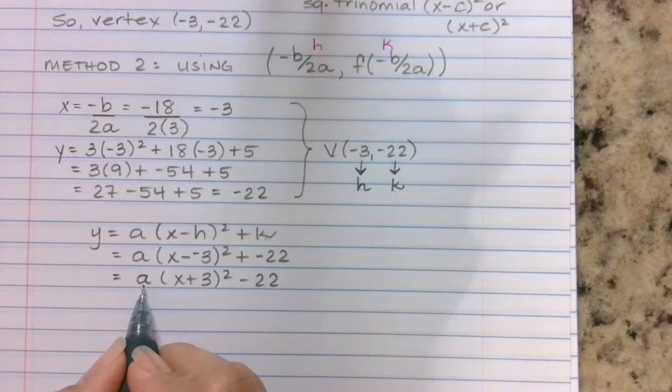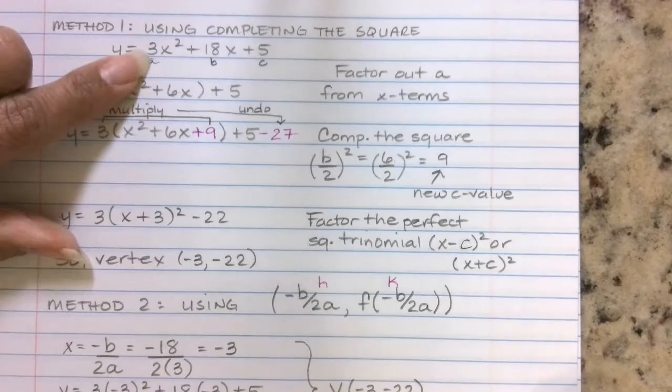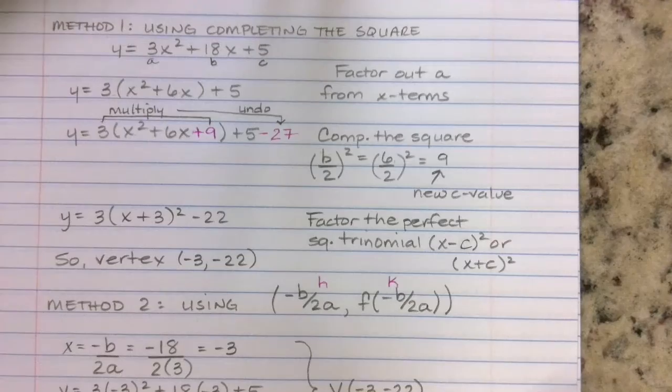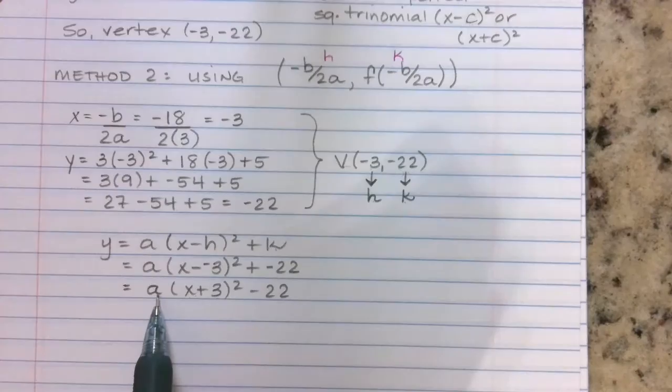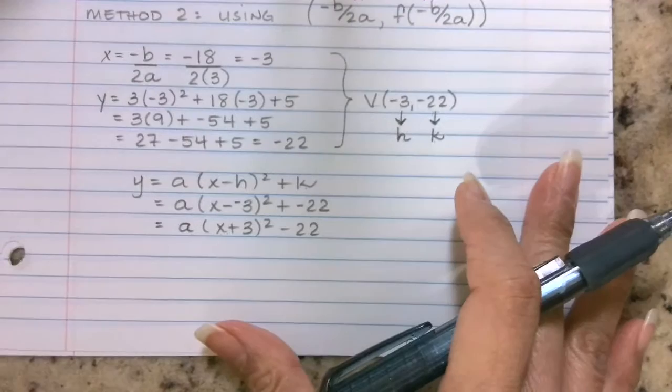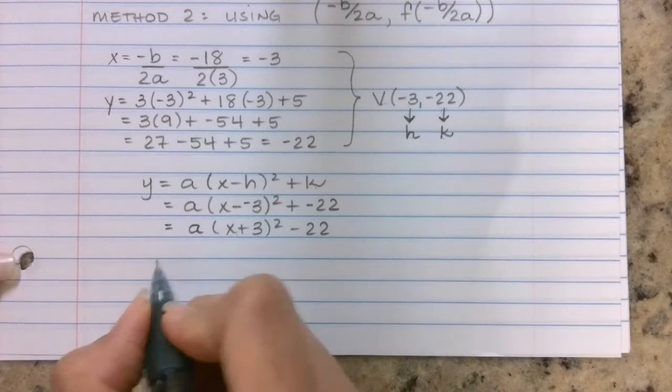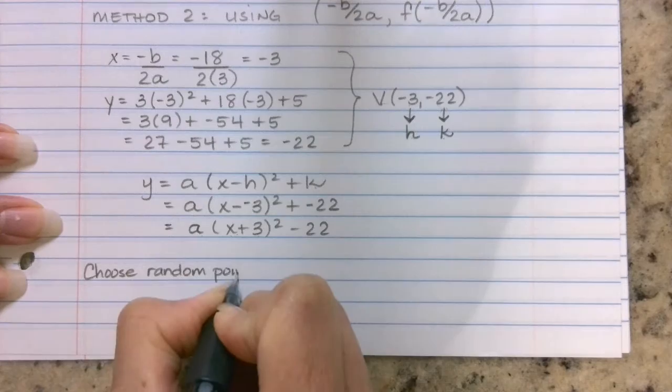We don't know what a is, so we need to find a. A lot of you are able to infer straight off the bat what a is going to be, because just by looking at your problem, you know 3 is the number that you would factor out from your x terms. But just in case you guys have to show work on this upcoming test, let me show you how you would do it. So I know we can infer that this is a 3, but let's show some work. So let's choose a random point on our graph. Totally random, but I'm all about choosing points that are easy to work with.